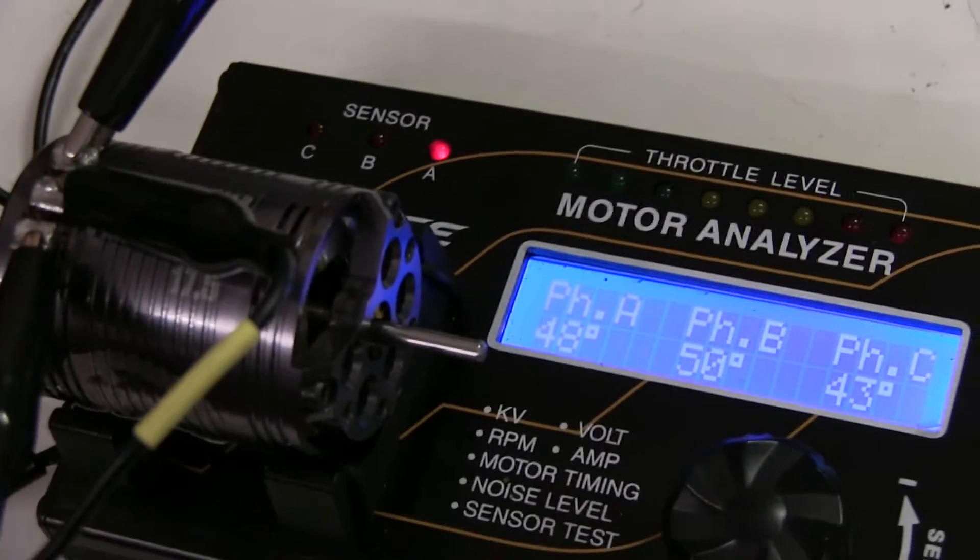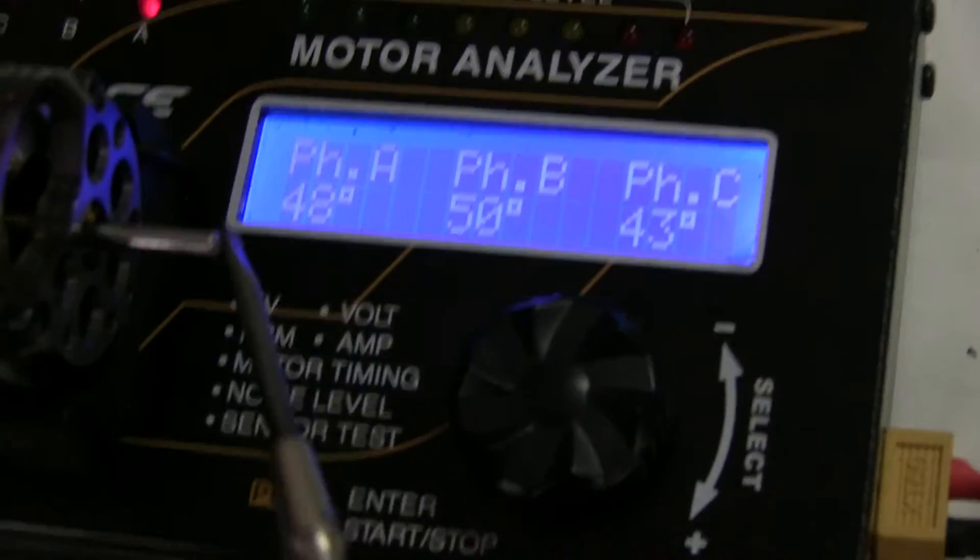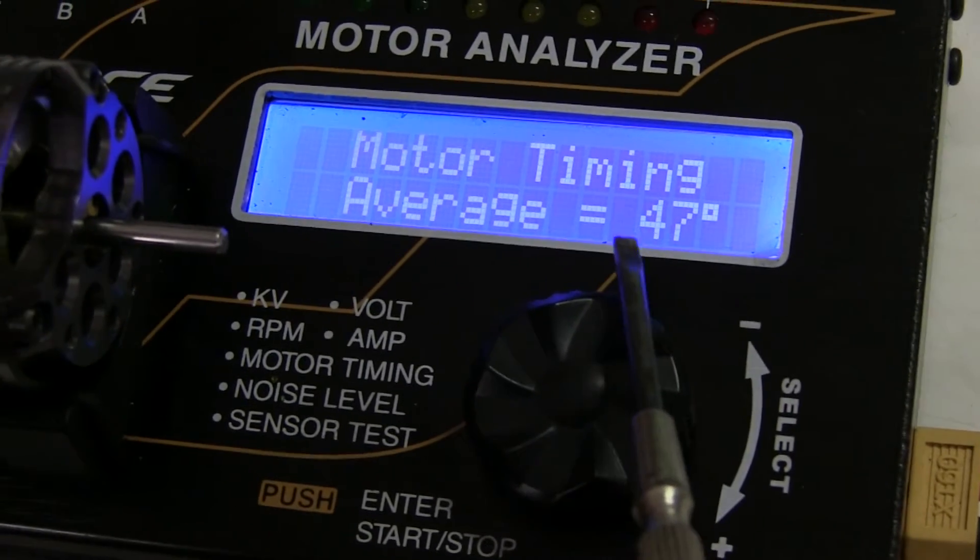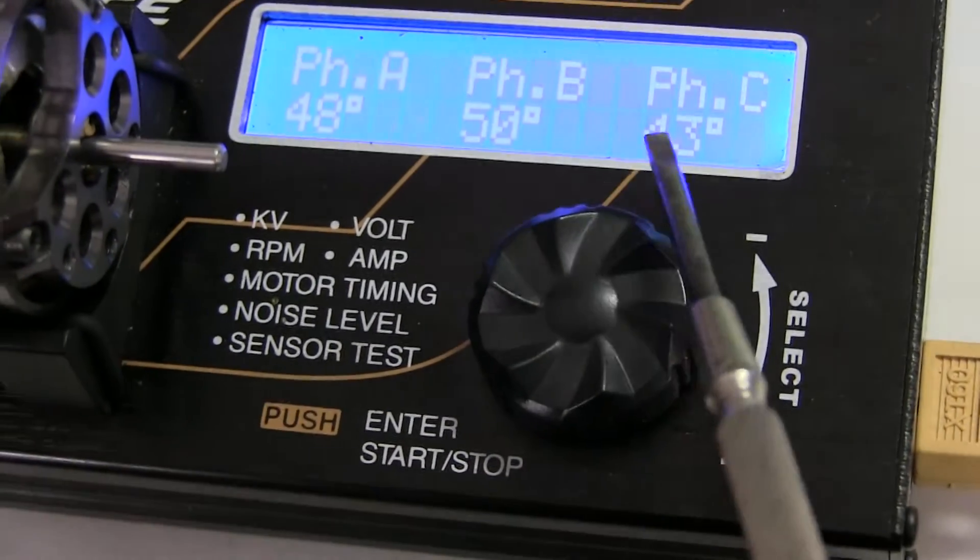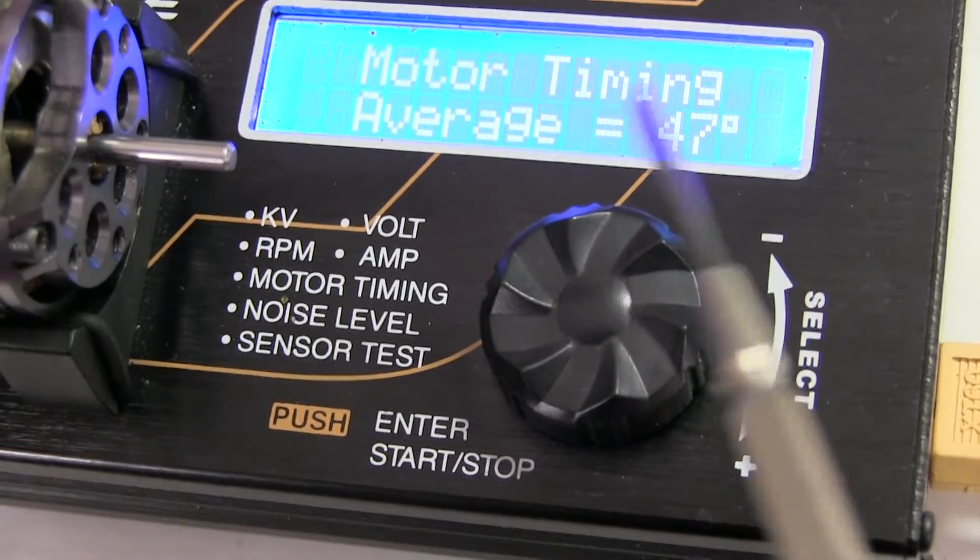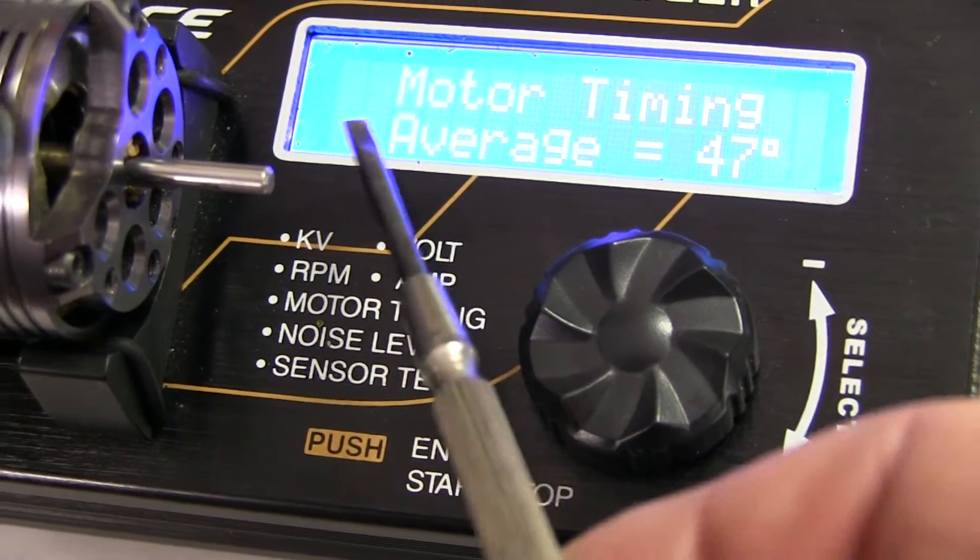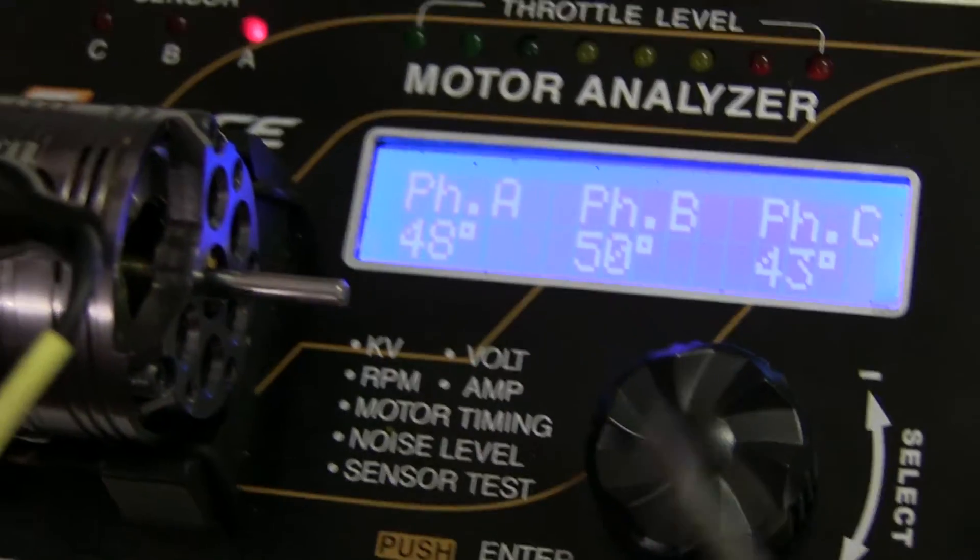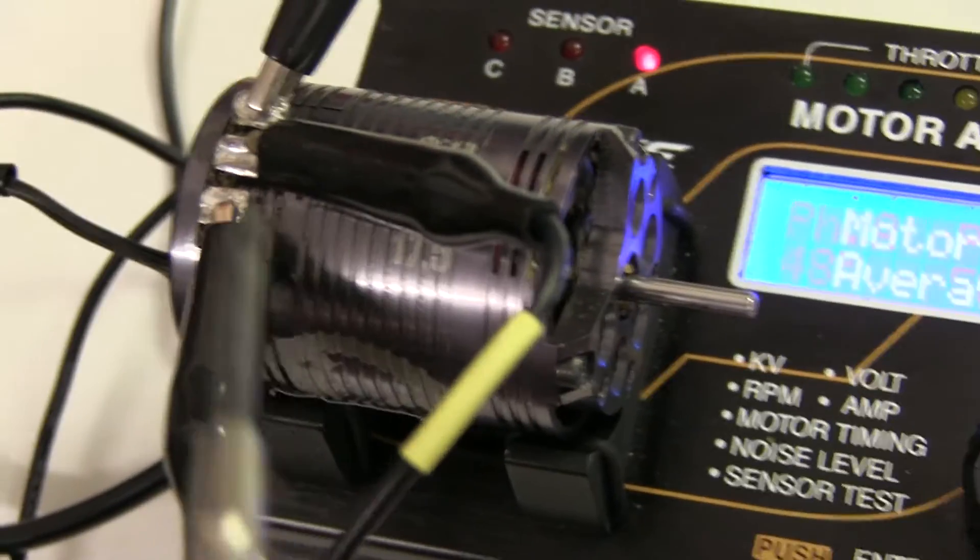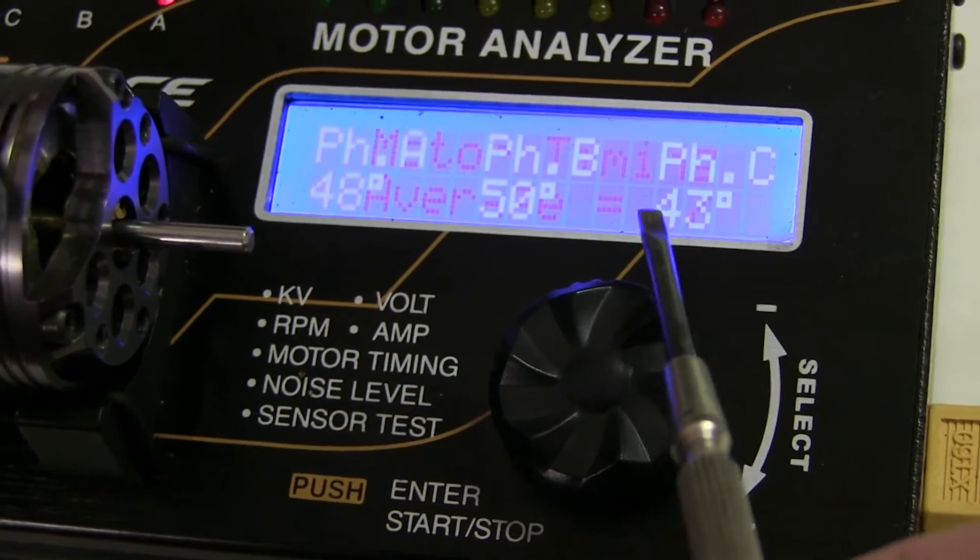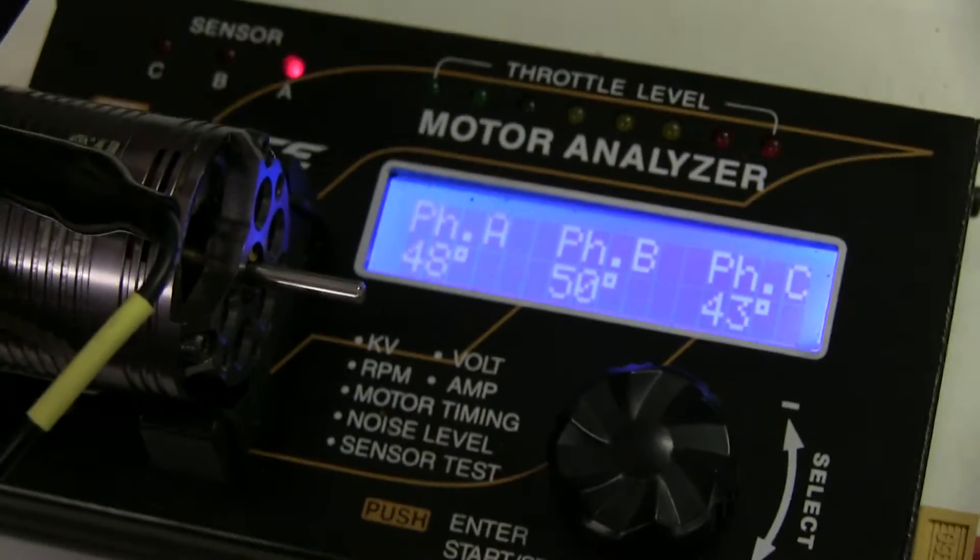Now here's a motor that doesn't appear to be performing as well as some other people's. Looking at the timing of the sensor board during the test, although it says average 47, it goes from 43 to 50 and one's at 48. So that one that is at 43 is going to have less timing pulses. At high revs, it's going to give more power on phase B and A than on phase C, and the motor's going to have some electronic vibration which is bound to affect its performance.